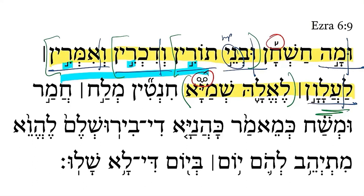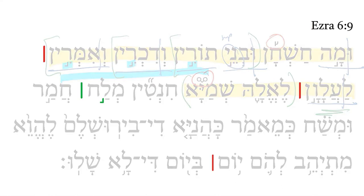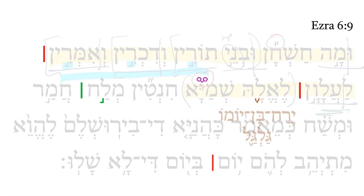Ezra 6-9, the third part. In this video, we're going to evaluate the Masoretic note that the red vertical strokes are Paseks, thus leaving the green notation to be a Munach LeGarmeh. To do this, we need to evaluate these accents.